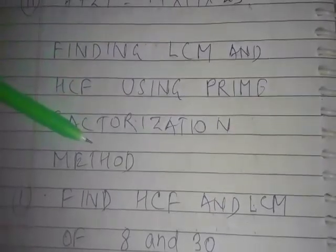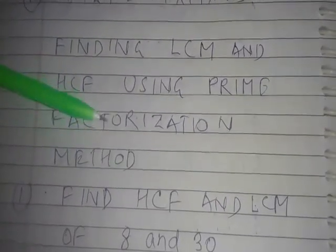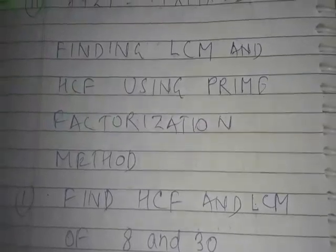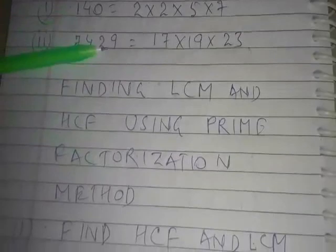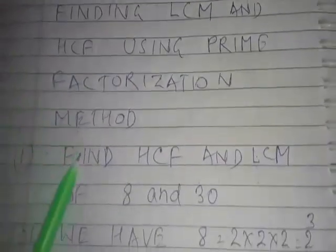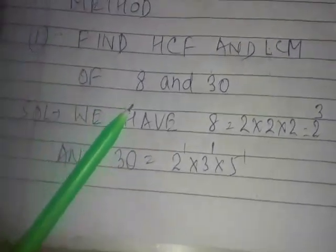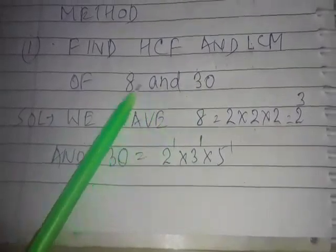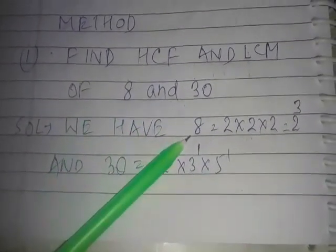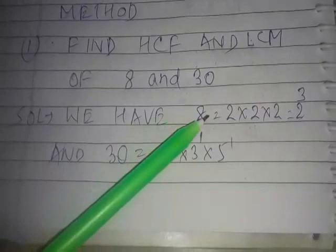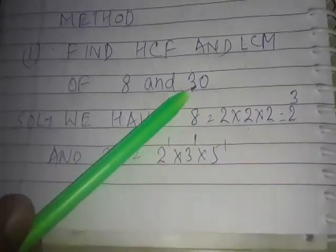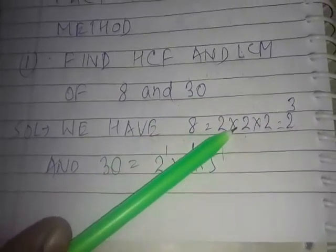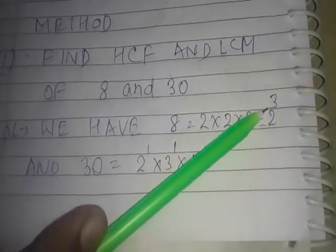Now we are going to discuss how to find LCM and HCF using the prime factorization method. We have understood how to find prime factorization; now we will learn how to find HCF and LCM using it. The numbers are 8 and 30. For that we find the prime factorization of both: 8 can be expressed as 2 × 2 × 2, which equals 2 to the power 3.